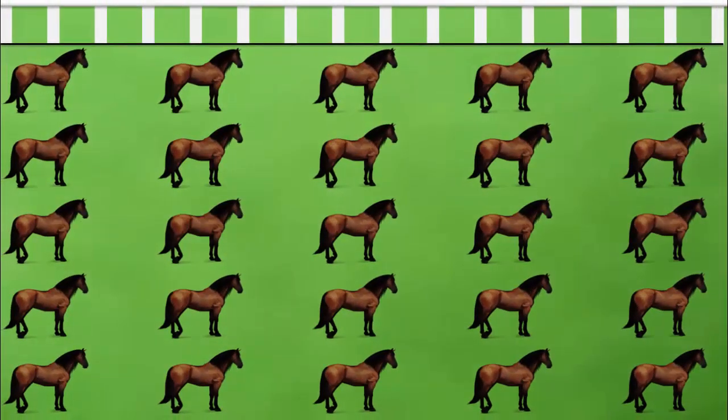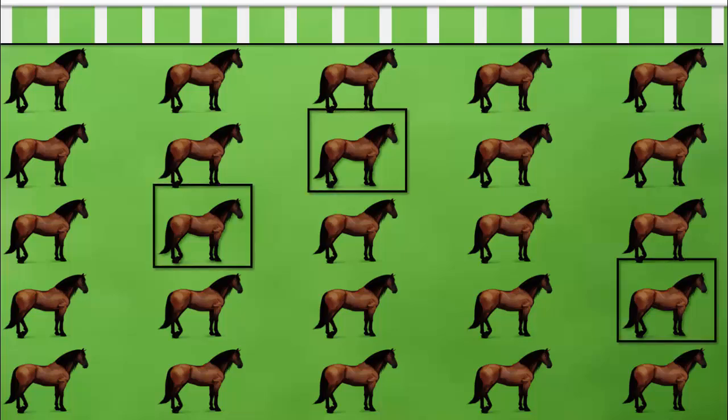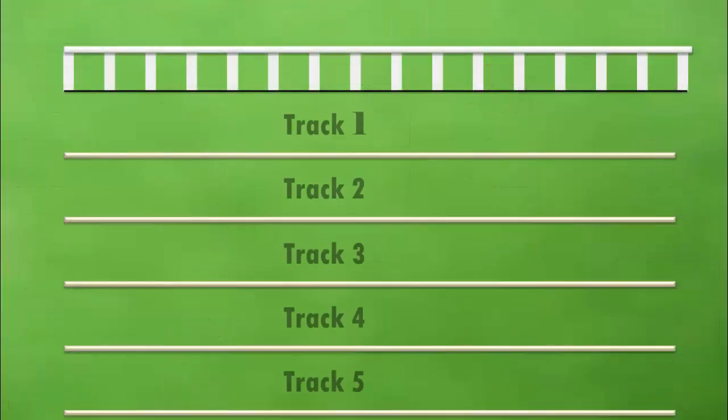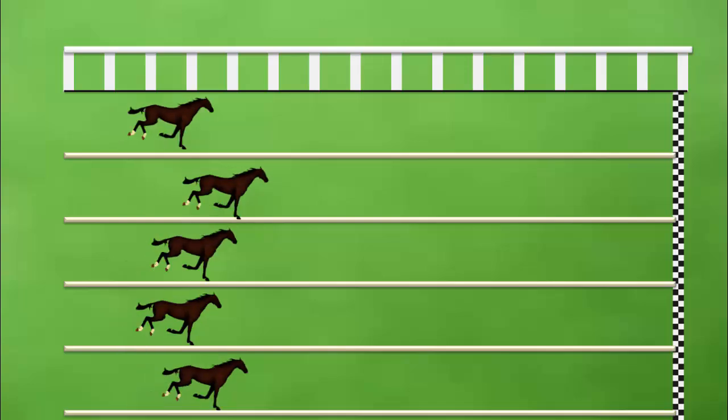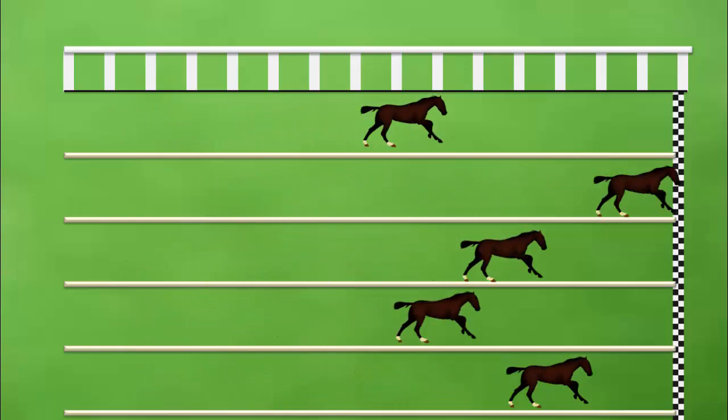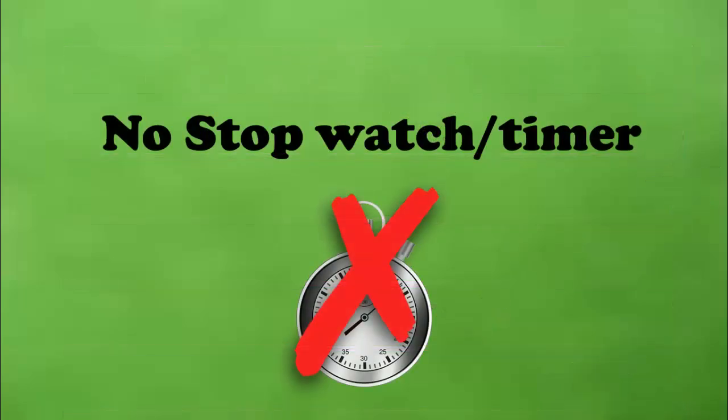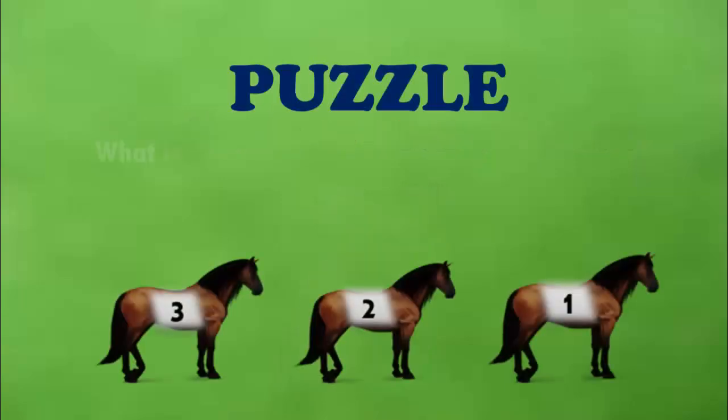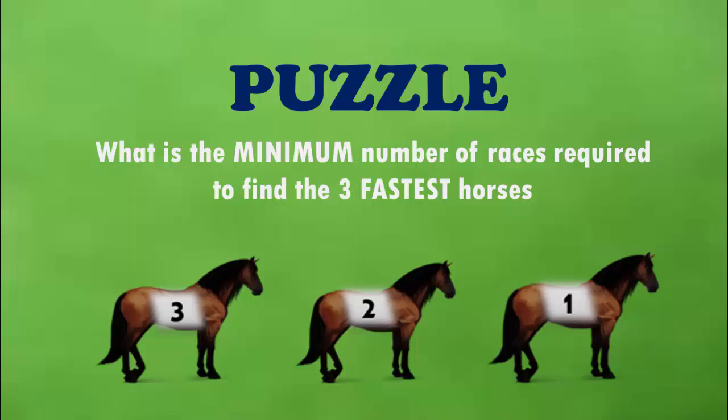You have 25 horses and you want to pick the fastest three horses out of them, so you decide to conduct a race. But you have only five tracks, so in one race only five horses can run at the same time. An important thing to note is you don't have any stopwatch or timer with you. What is the minimum number of races required to conduct in order to find the fastest three horses?